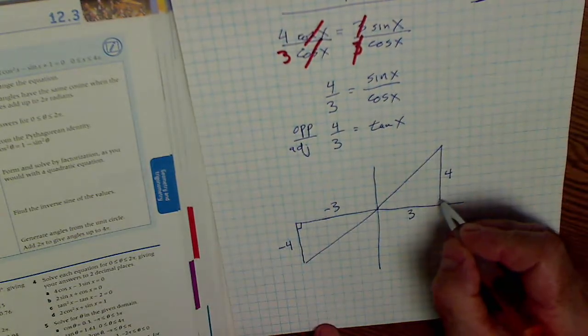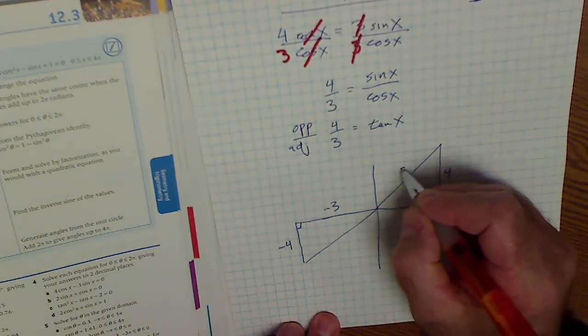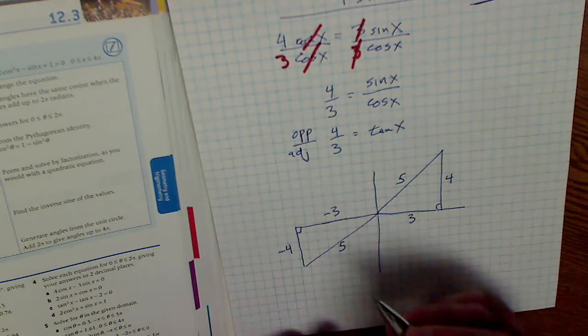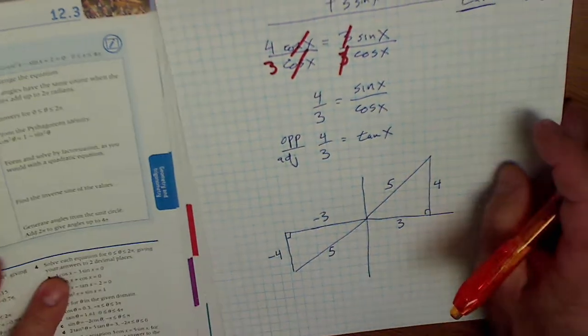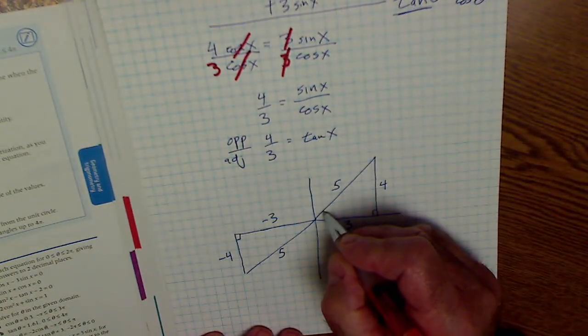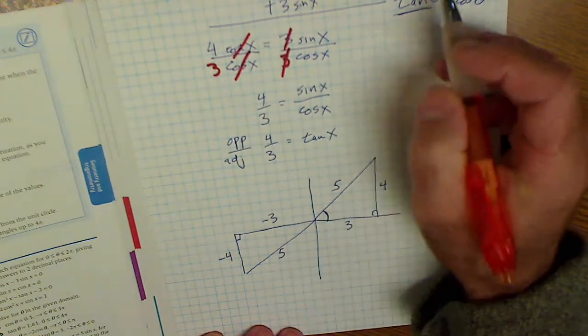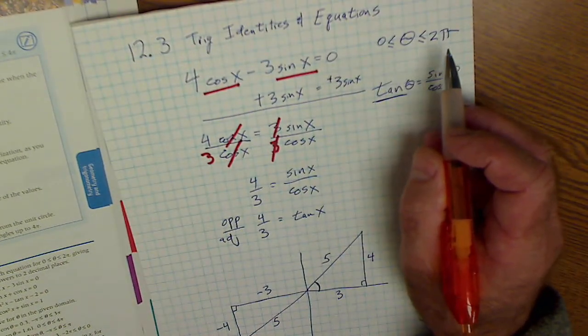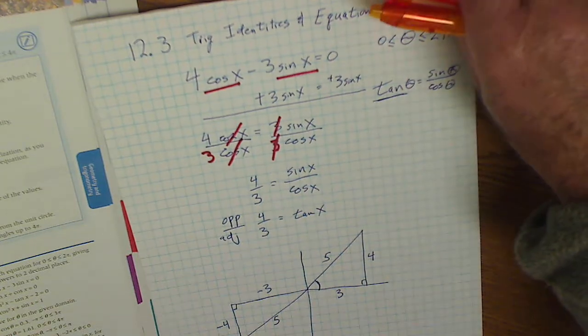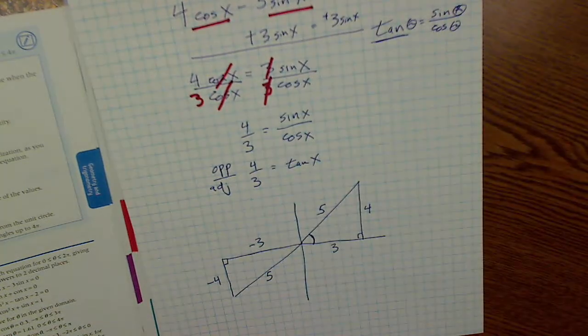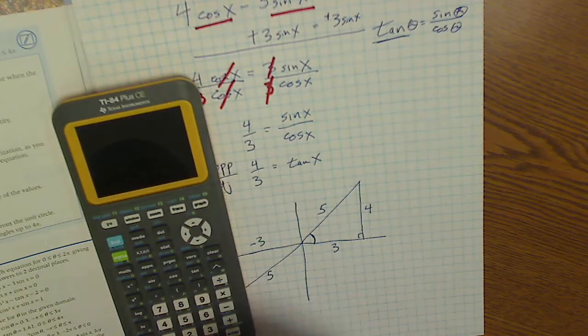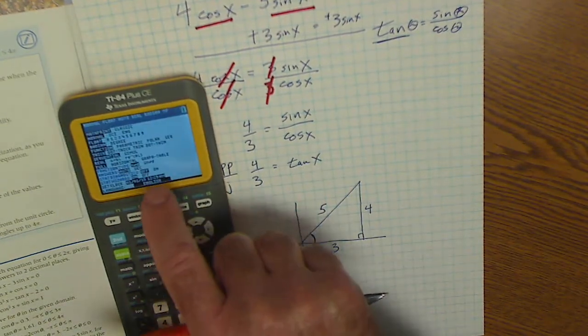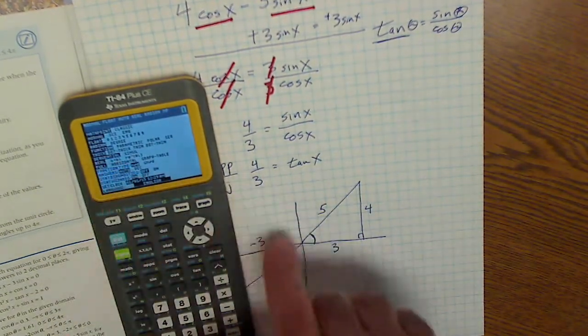I could use Pythagorean theorem to say 3 squared plus 4 squared is 5 squared. But this problem is asking me to solve for x to measure this angle, and it's between 0 and 2 pi. And because it's between 0 and 2 pi, it's telling me it's radian. So what I'm going to do on my calculator is the first thing I do is I go to radian mode. So I'm in radian mode.